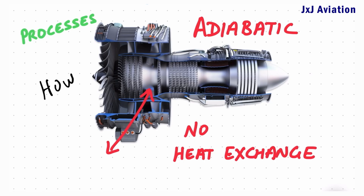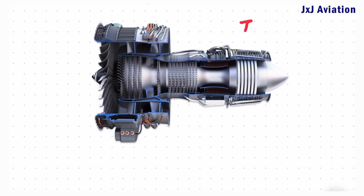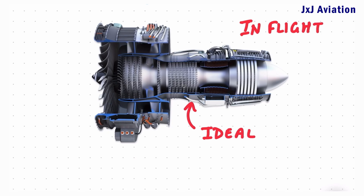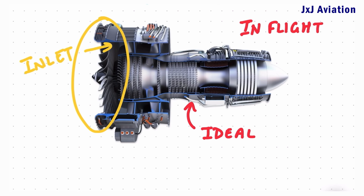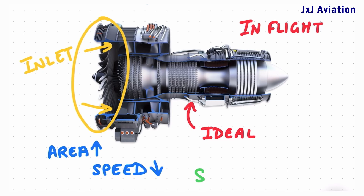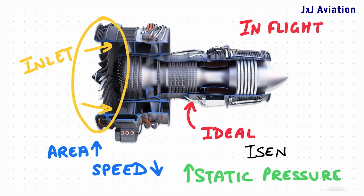Let's see how these processes of the Brayton cycle are applicable in a gas turbine engine. Let's consider an aircraft in flight with an ideal gas turbine engine. This is the inlet section of the engine. The inlet section expands, which means the cross-sectional area increases. Here, the speed of the incoming air decreases, and this decrease in speed increases the static pressure of the air. This is an isentropic process.